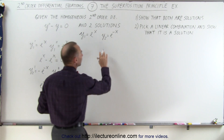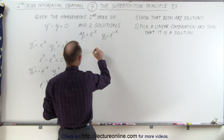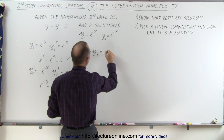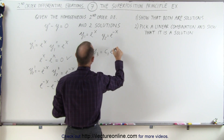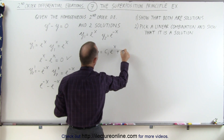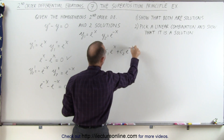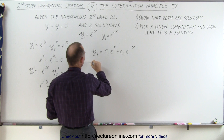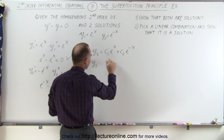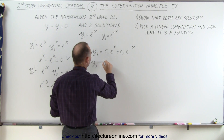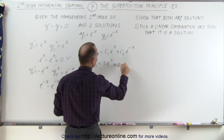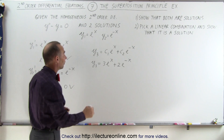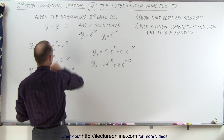Now let's pick a random linear combination. We have y3 equal to c1 e to the x plus c2 e to the minus x. We're going to pick some numbers — let's pick three and two. So the third solution, which is a linear combination, is equal to 3e to the x plus 2e to the minus x. Now let's see if that is also a solution to the differential equation.